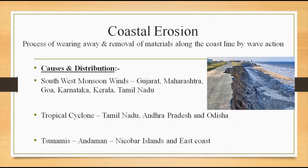What are the causes for this coastal erosion? The main cause is the southwest monsoon winds, which cause intensive coastal erosion. Coastal erosion is more towards the western coast than the eastern coast because the southwest monsoon winds hit the western coastal region. States like Gujarat, Maharashtra, Goa, Karnataka, Kerala and Tamil Nadu along the western coast are affected by coastal erosion.